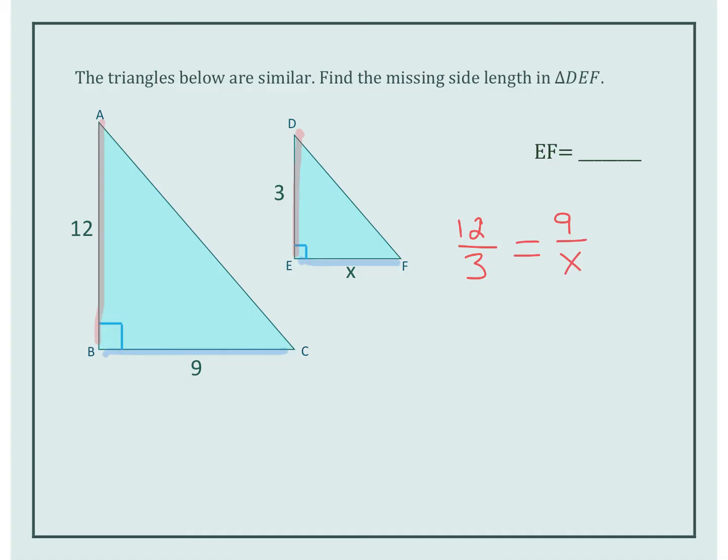Now in order to solve these, we are going to cross multiply and divide. In this case, when we cross multiply, we're going to start with 12 times X which is 12X, and then we have 9 times 3, which is 27.